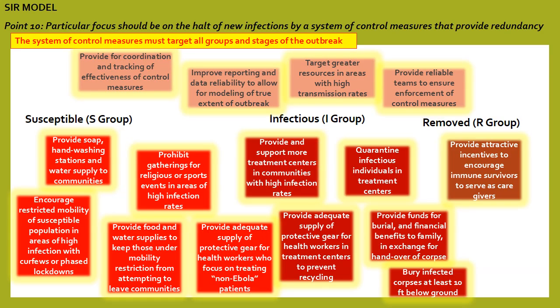This slide presents a myriad of control measures meant to provide the redundancy needed to tackle the rate of infection at all possible levels. Within the infectious population, there need to be more well-equipped and well-staffed treatment centers, particularly in communities of high infection. Financial incentives are needed both for families who have lost loved ones and need to be encouraged to hand over corpses, and to survivors who are immune and can support as caregivers. Susceptible populations must have food and water supplies provided while their mobility is restricted, as well as means to keep up hand washing. The need to support healthcare workers cannot be overemphasized — they are bearing the brunt of the outbreak and must be given the protection and reimbursement that is due. Such a complex program cannot succeed without careful coordination, planning, and enforcement, which requires many individuals and organizations to work together.